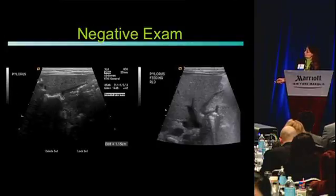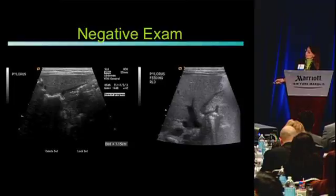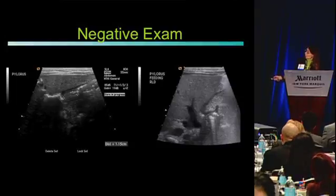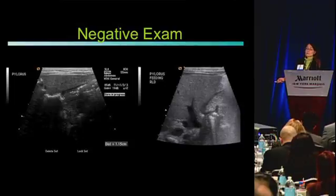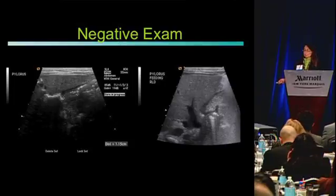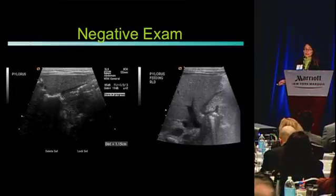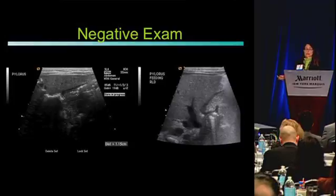Here are examples of a negative exam. We see the nice normal stomach, a normal wall, and a short channel measuring around a centimeter. With Pedialyte, the channel opens up nicely with fluid flowing through — a normal, reassuring exam. When I was in training we used to do upper GI series for these, which were terrible for this pathology. Now we completely trust a positive or negative ultrasound study because it's very accurate.